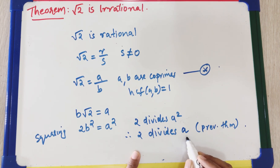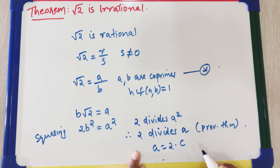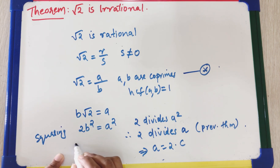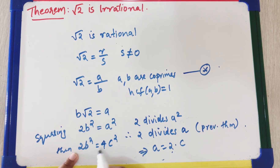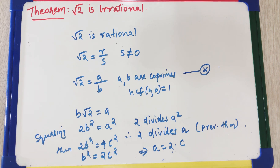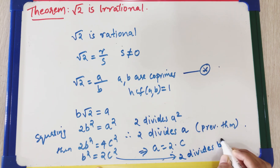Since 2 divides a, we can write a = 2c for some integer c. Substituting into our equation 2b² = a², we get 2b² = (2c)² = 4c², which simplifies to b² = 2c². This means 2 divides b². Again, by the previous theorem, 2 divides b.